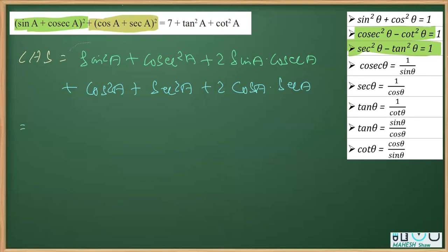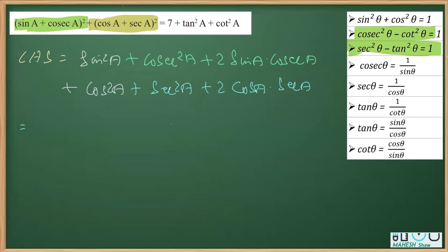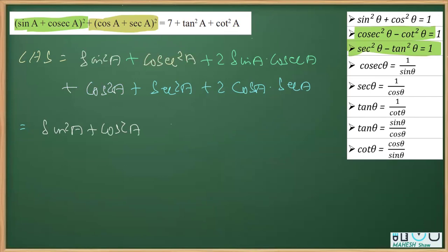The rearrangement involves writing first sin²a and then plus cos²a. We know that sin²a + cos²a = 1. So I am copying sin²a + cos²a first, and next writing cosec²a. We know that cosec²a equals 1 + cot²a.